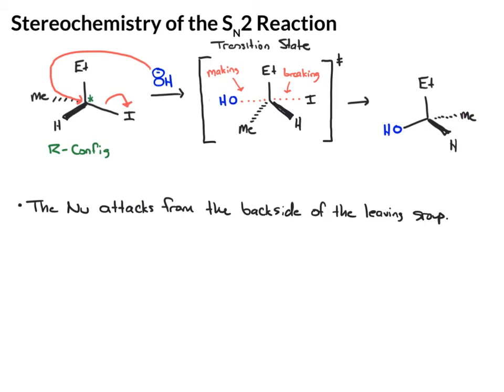Think of this almost as an umbrella flipping inside out. You have these groups here, and as you do this step, you get this intermediate where it's flattened out, and then those groups flip over to the other side.